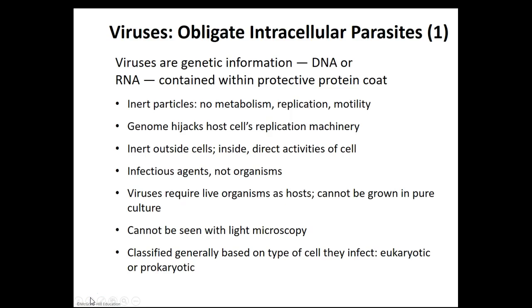Viruses are very simple. They basically contain DNA or RNA — some sort of genetic information. That genetic information could be single-stranded, double-stranded, linear, or circular. But the point is, they never contain both DNA and RNA at the same time. Also, viruses at minimum have to contain a protective protein coat, referred to as a capsid, but we'll define that in a later slide.